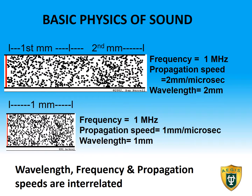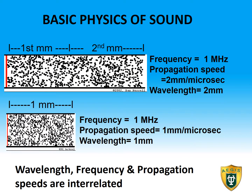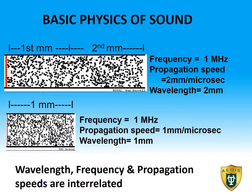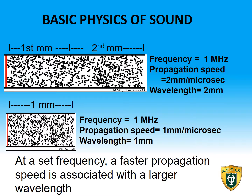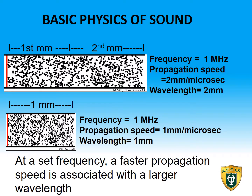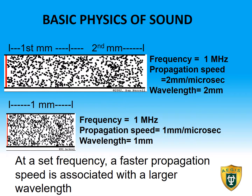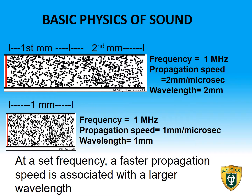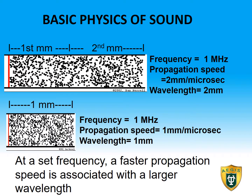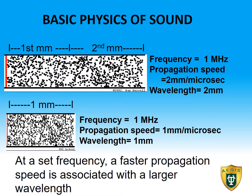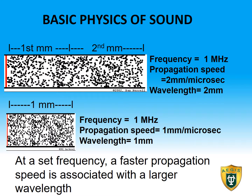Wavelength, frequency, and propagation speed are interrelated. So if one of these variables is held constant, the other two will change in relation to one another. If an ultrasound generator is at a set frequency and the sound waves pass through a solid medium, the faster propagation speed will be associated with a longer wavelength. Alternatively, if the same generator is set at the same frequency and the sound waves pass through a liquid medium, the slower propagation speed will be associated with a shorter wavelength.